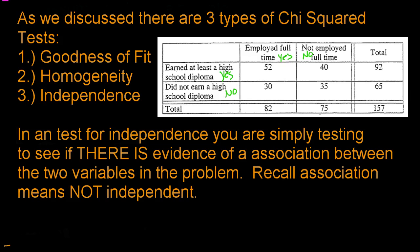In a test for independence, you are simply testing to see if there is evidence of an association between the two variables in the problem. An association means not independence. We've actually been talking about independence since the very beginning of the course, but this is one where we can actually officially test for it.